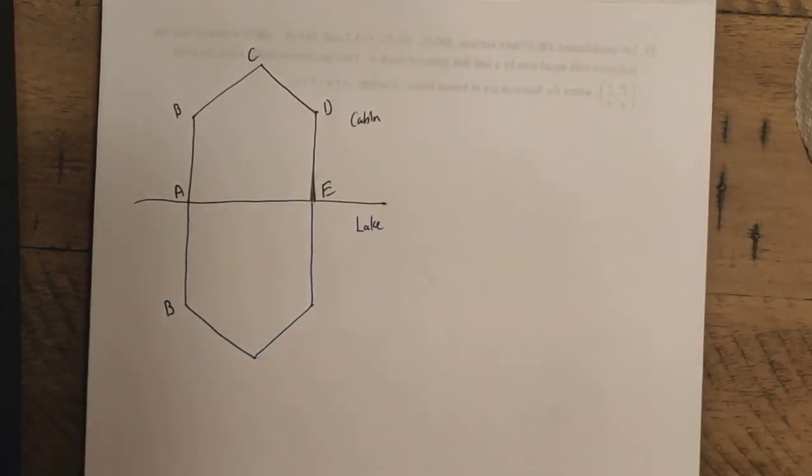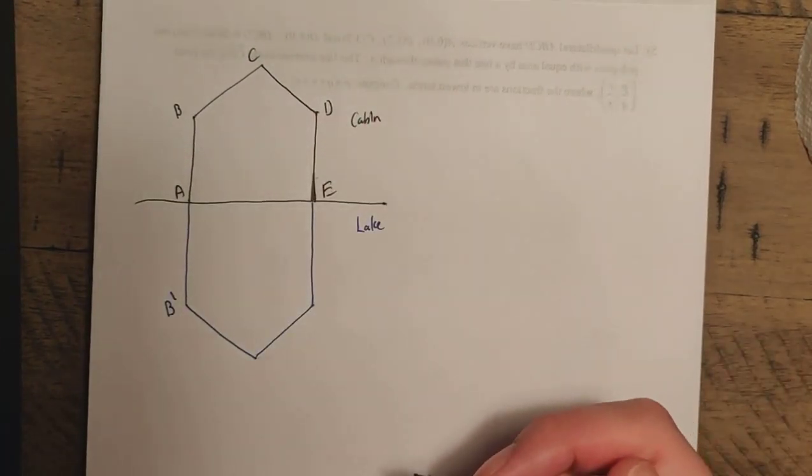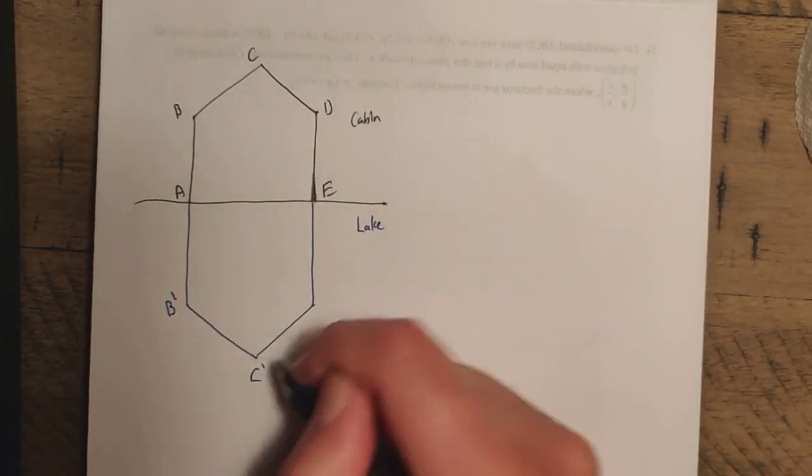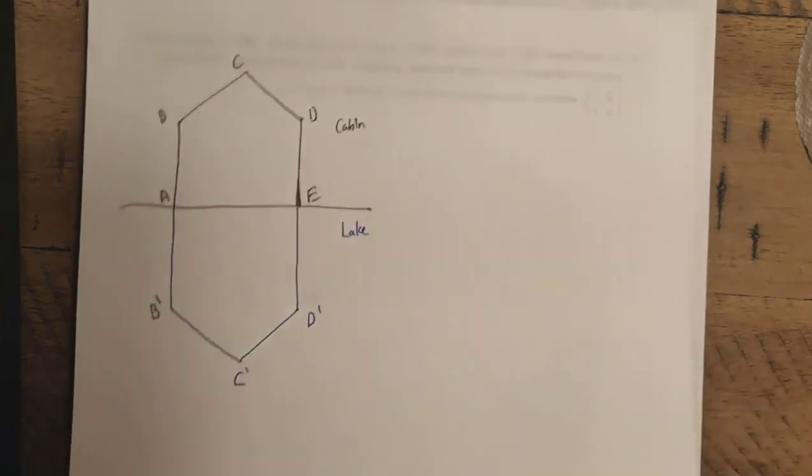So I'm going to call this B prime here. I'm going to put a little hatch mark on the side. Same thing is going to be true for C prime and D prime here. So we use this idea of B prime, C prime, and D prime here. Note those are the images, and then we have the pre-image.